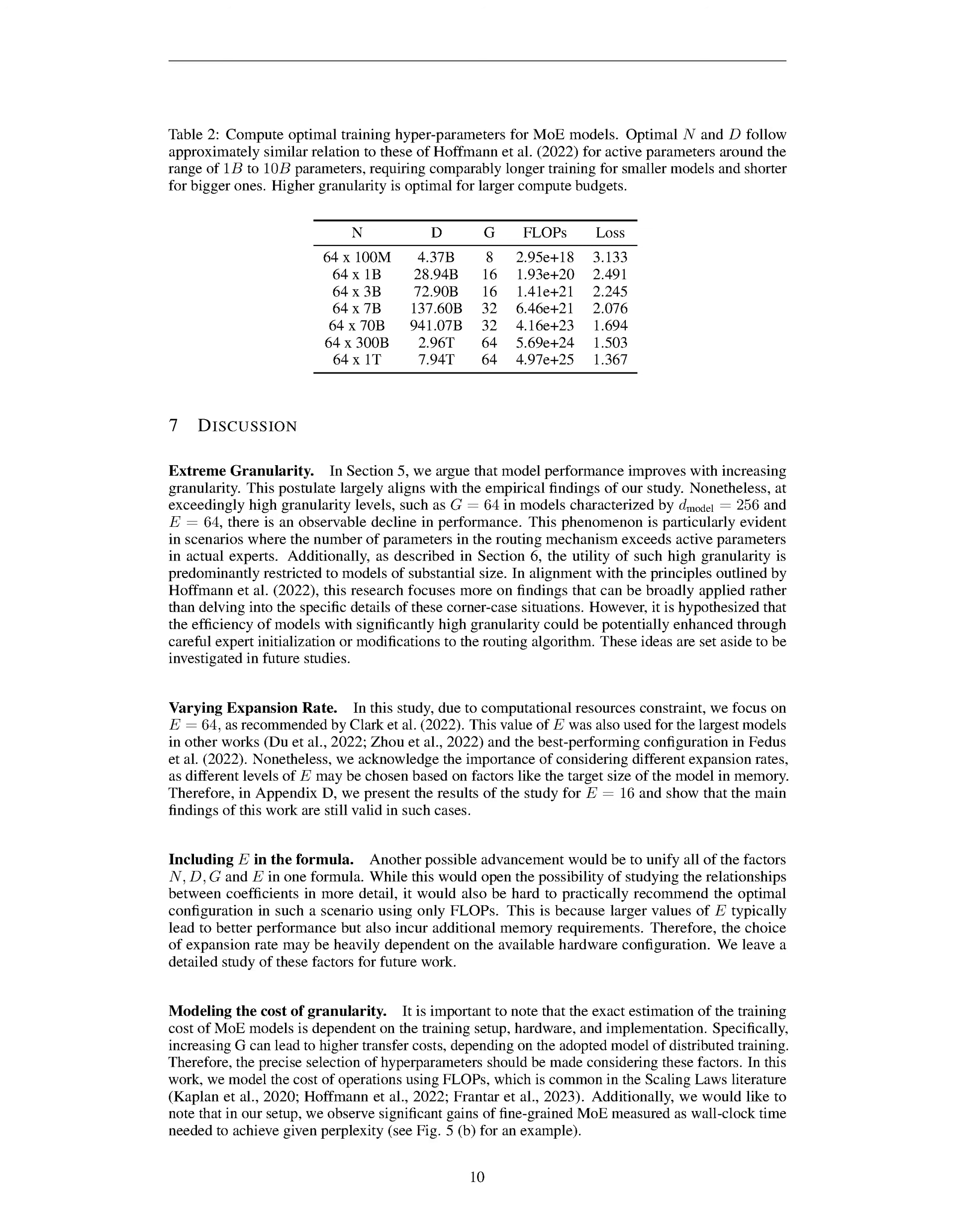Section Summary. In this section, we demonstrate that higher granularity can reduce loss with the same training steps, but this may not hold true when considering wall clock time due to potential bottlenecks in training caused by routing costs. Increasing granularity can lead to challenges like higher computational and communication costs, mainly due to increased routing operations with a larger pool of experts. We tackle the computational cost of granularity by analyzing flops, and while extreme granularity can enhance model performance, there's a performance decline at excessively high levels, suggesting the need for careful expert initialization or routing algorithm modifications for future efficiency improvements.